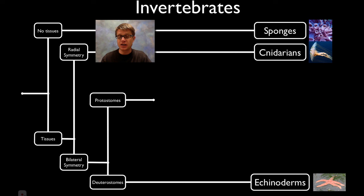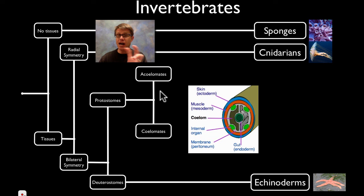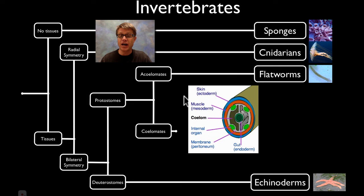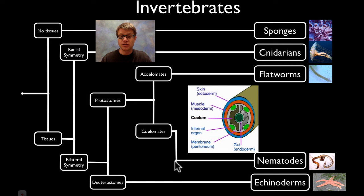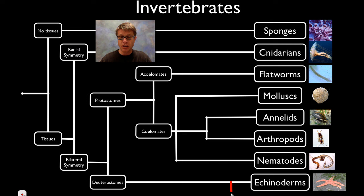The other deuterostomes are going to be the echinoderms, things like this sea star. Protostomes are broken into two groups: the acoelomates and the coelomates. When you get folding with an endoderm on the inside, mesoderm, and ectoderm on the outside, sometimes there's a coelom — a gap or space inside. Those without it are the acoelomates, like flatworms such as planaria. Then there are pseudocoelomates, which have a coelom not fully surrounded by mesoderm. The other big groups are the annelids (segmented worms like leeches), the arthropods (insects, crustaceans), and the mollusks.